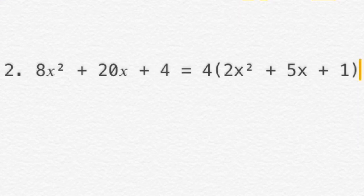To check: 4 times 2x squared is 8x squared, the first term. 4 times 5x is 20x, the second term. And 4 times 1 is 4, the third term. This confirms our answer is correct.